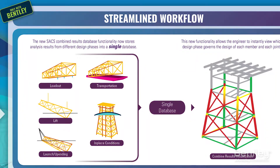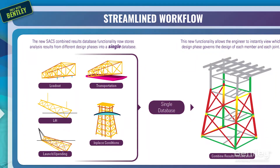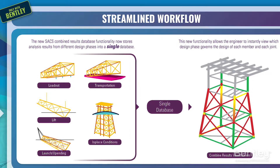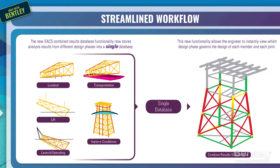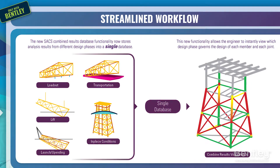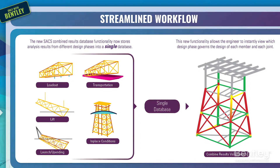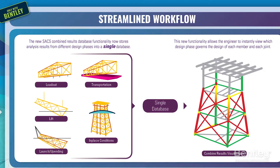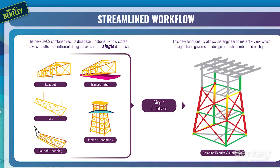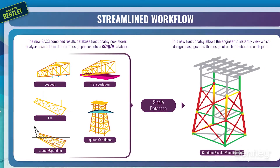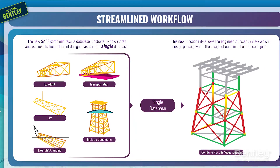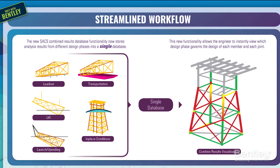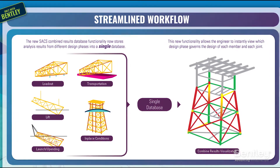The new SACS Combined Results database functionality now stores analysis results from all the different design phases into a single database, which can be reviewed graphically or numerically. This new functionality allows the engineer to instantly view which design phase governs the design of each member and each joint.